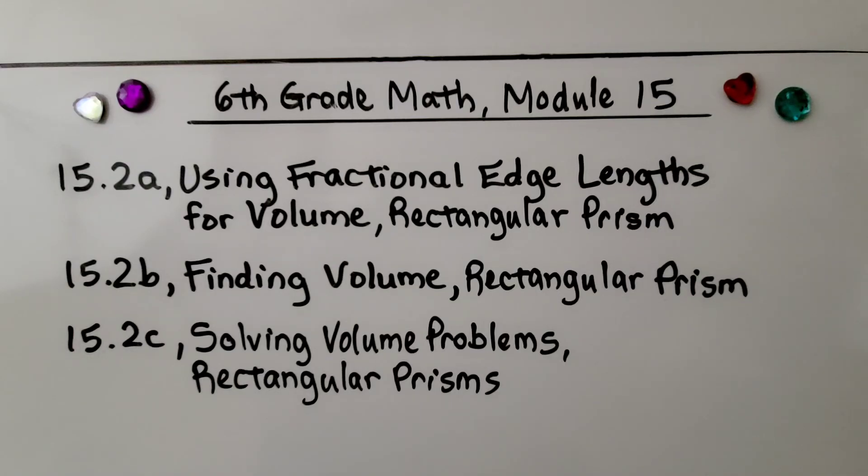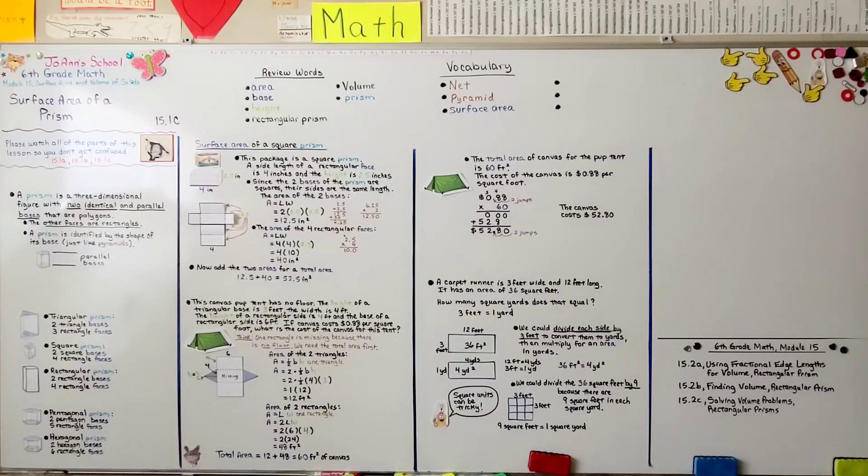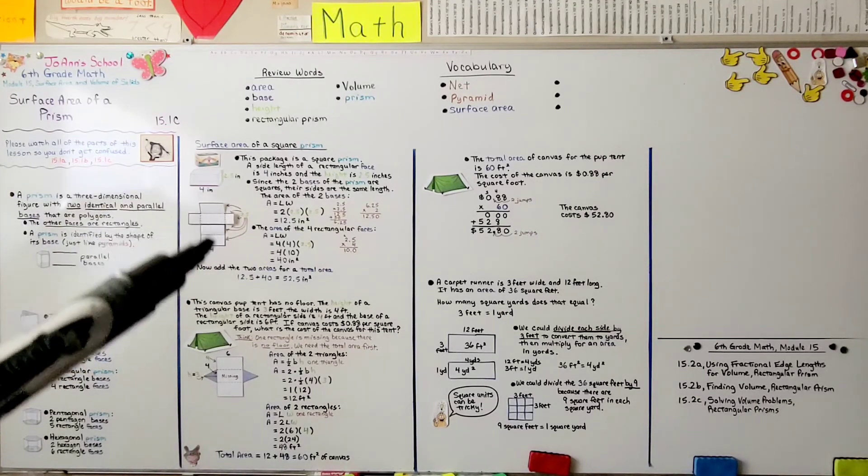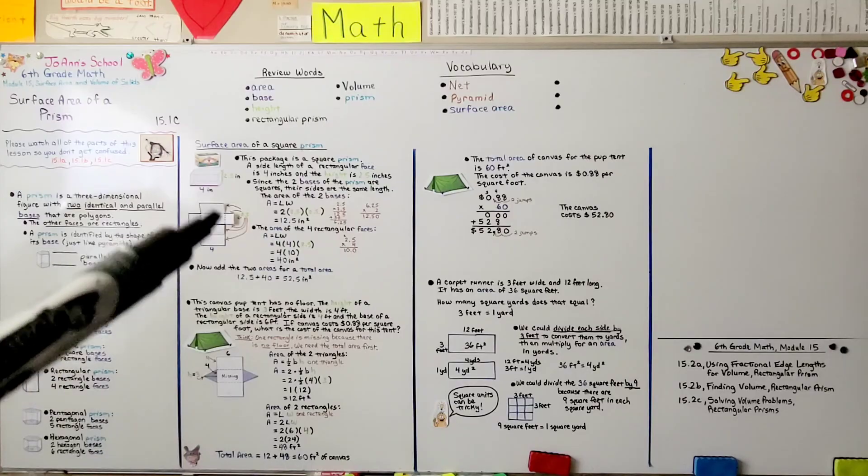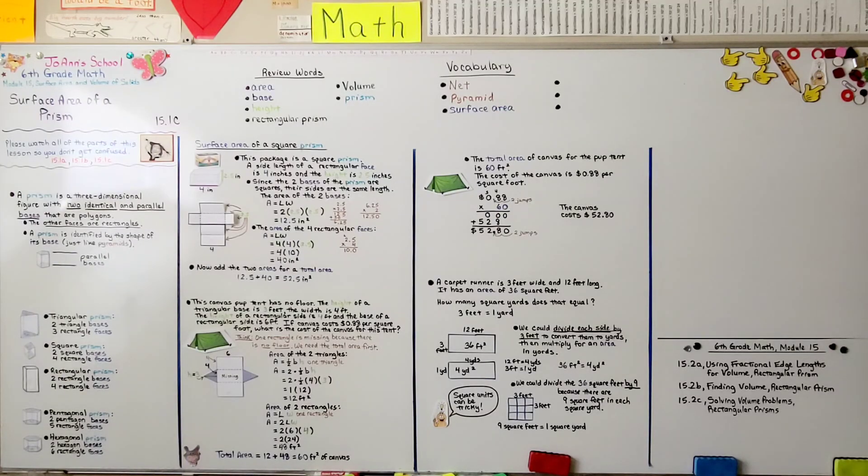We're finished with lesson 15.1. We're moving on to 15.2, which is broken into three parts. The first part is using fractional edge lengths for volume. We're going to be doing rectangular prisms. The best advice I've got for you when working with three-dimensional figures is to make sure you're including every side of that prism or pyramid or shape. Have a wonderful day, and please join me for the next lesson. Bye.